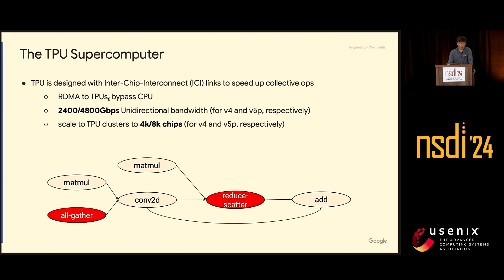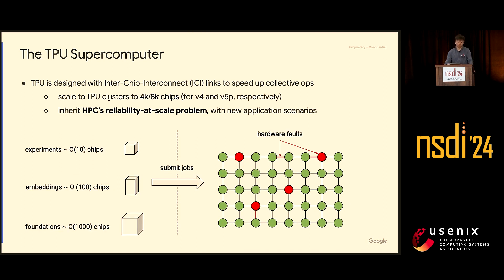As we build ICIs and scale them to large scale, we inherit all the conventional HPC community's reliability-at-scale problems. These problems are not new. Users keep submitting jobs at different scales: some with 10 chips for researchers experimenting with new model architectures, some with hundreds of chips for embedding models for ads recommendation, and sometimes thousands or tens of thousands of chips for foundational AI models. The supercomputer will have faults all the time — at the chip level, link level, TPU, CPU, data center network, ICIs.